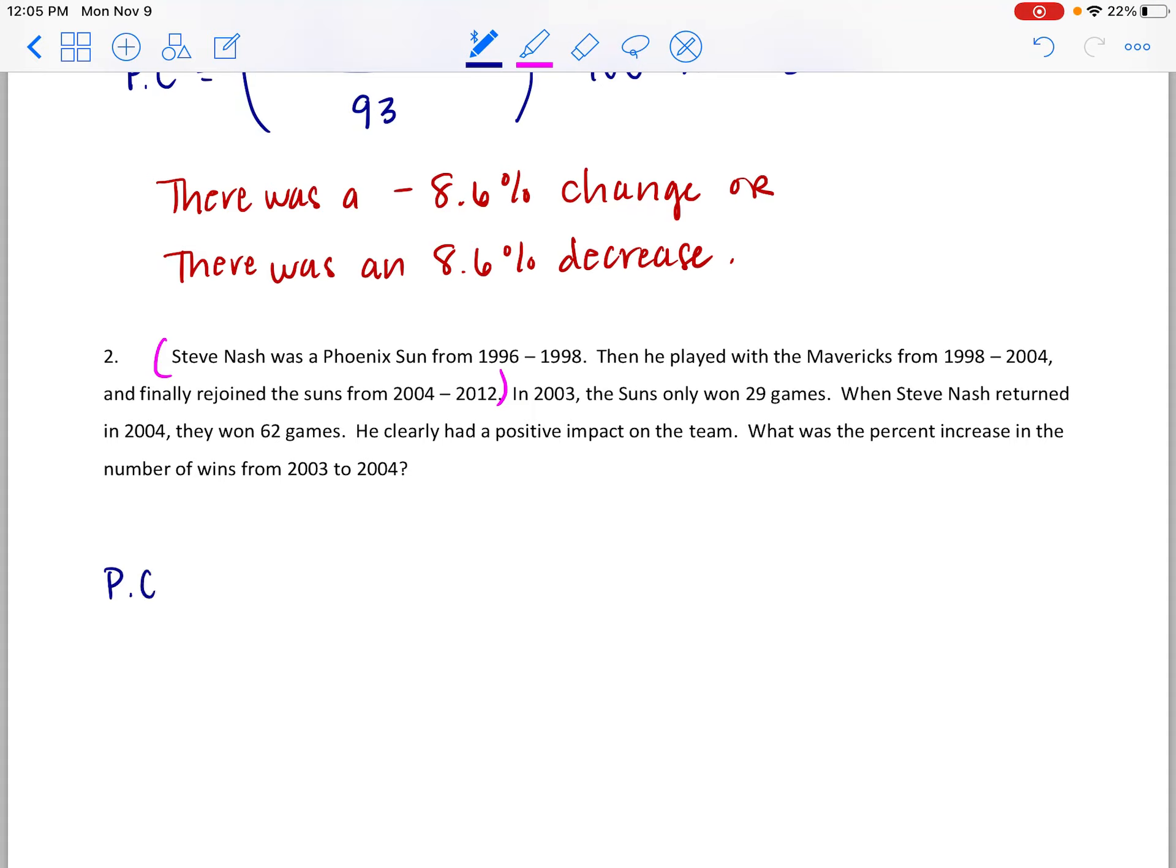They started out with 29 games in 2003. So for our percent change, 29 games is going to be our baseline. And then when he returned in 2004, they won 62 games. So 62 games minus the 29 they had won previously is going to show us the change in the amount. And if we divide by the 29, we get the percent change. So from 29 games to 62 games, we want to take the bigger number and subtract the smaller number this time because this is a percent increase.